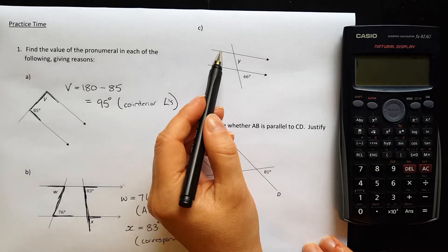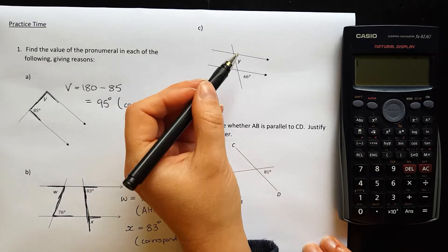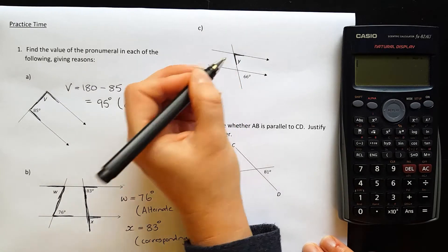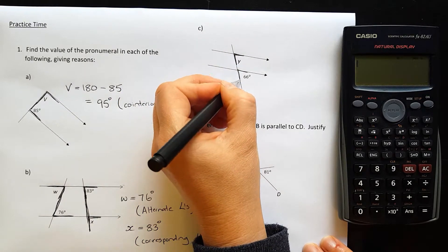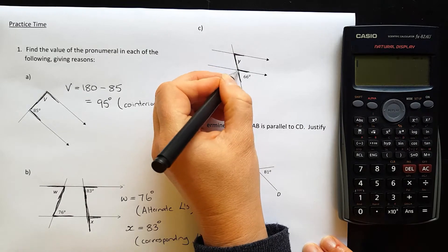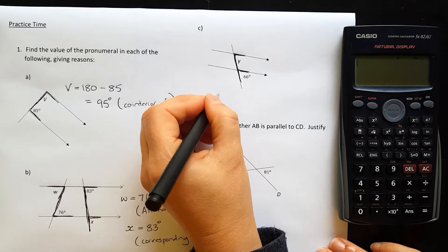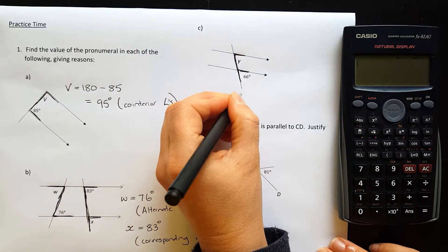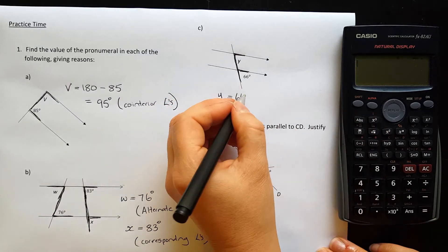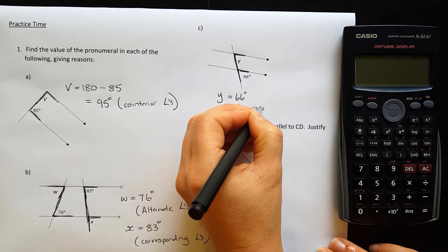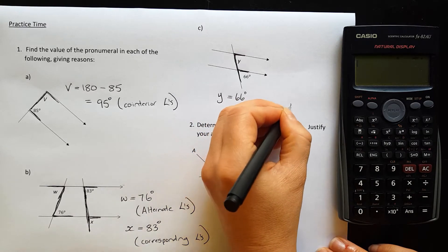Part C. We're trying to find Y, which is this angle in here. It and the 66 are forming an F shape. So that means that Y is going to be equal to 66 because of corresponding angles.